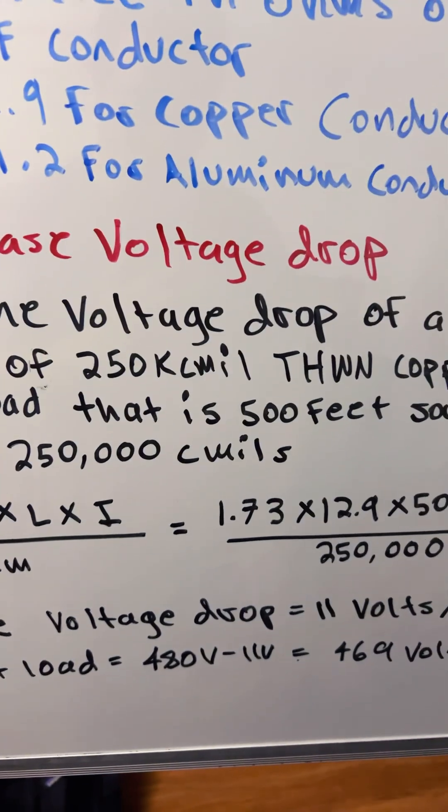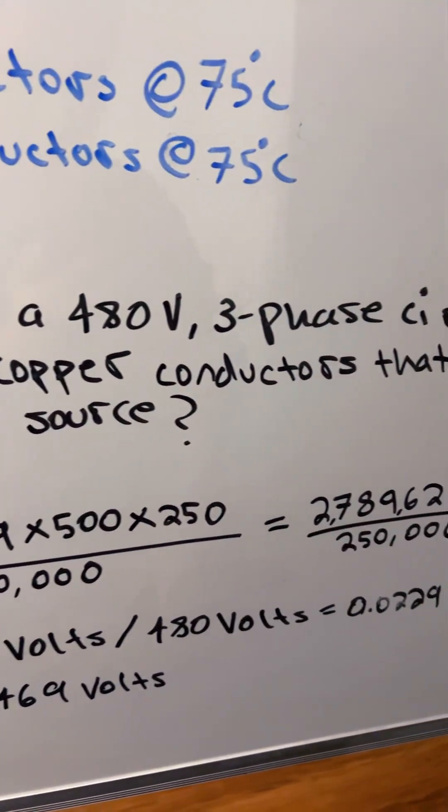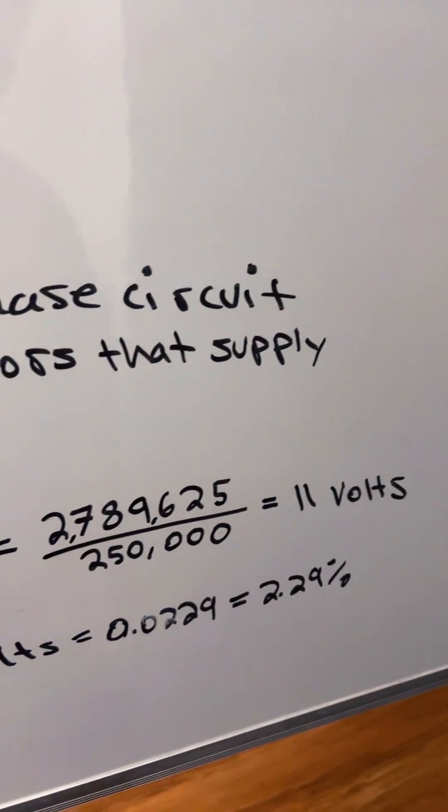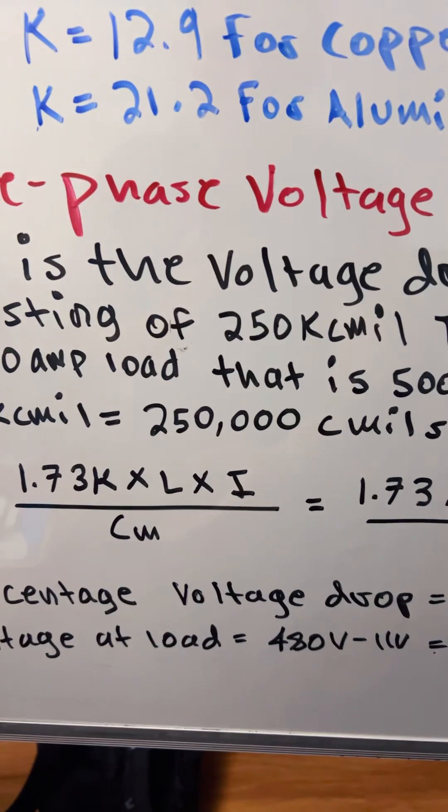equals 0.0229 or 2.29 percent. The voltage at the load with voltage drop equals 480 minus 11 volts equals 469 volts.